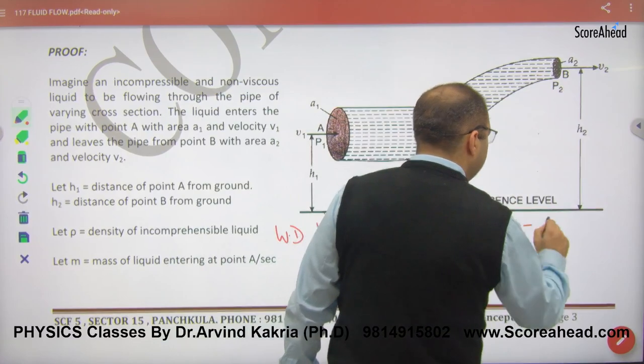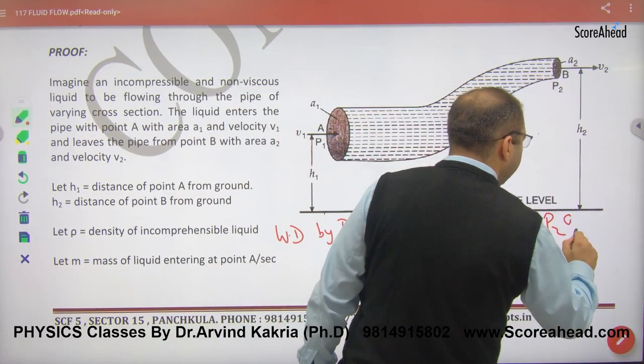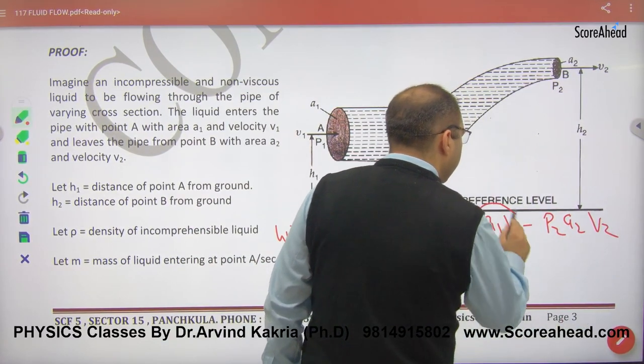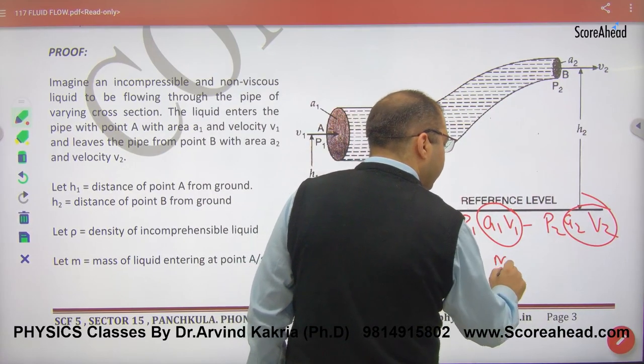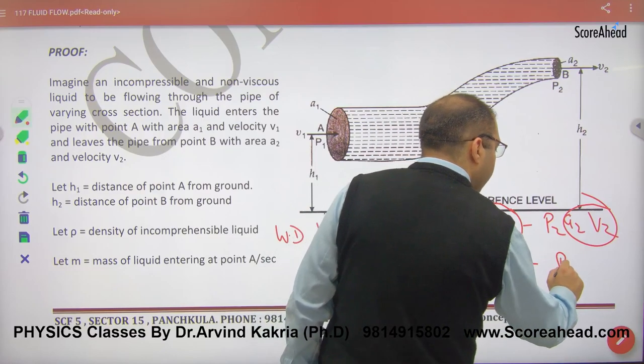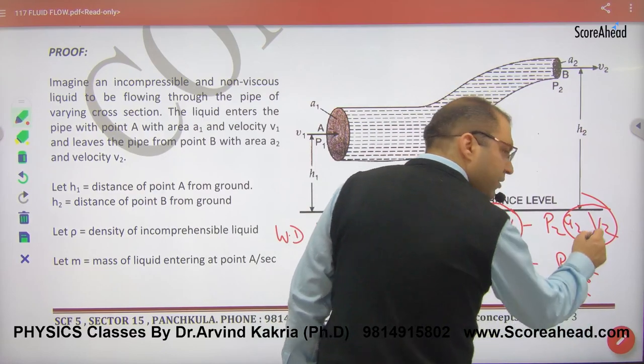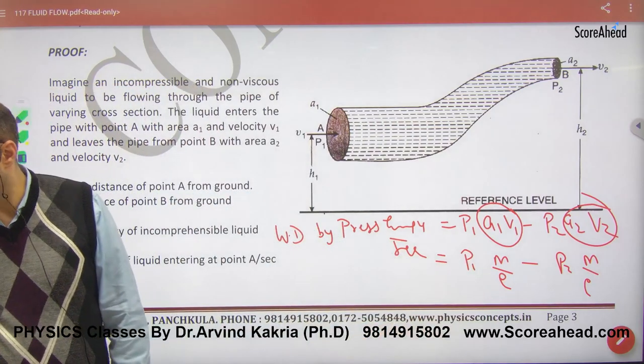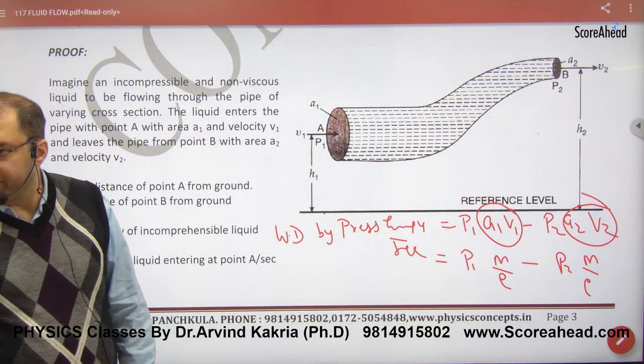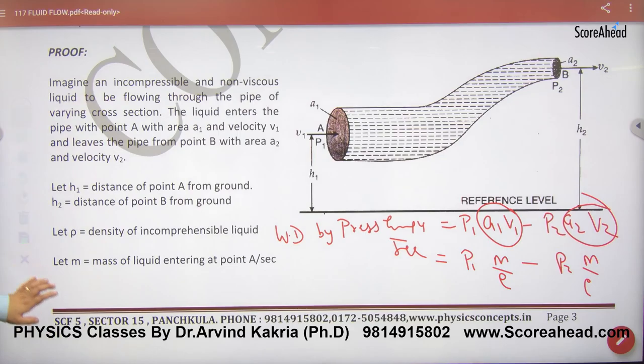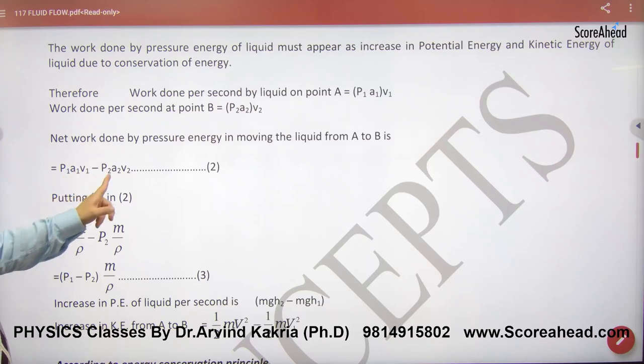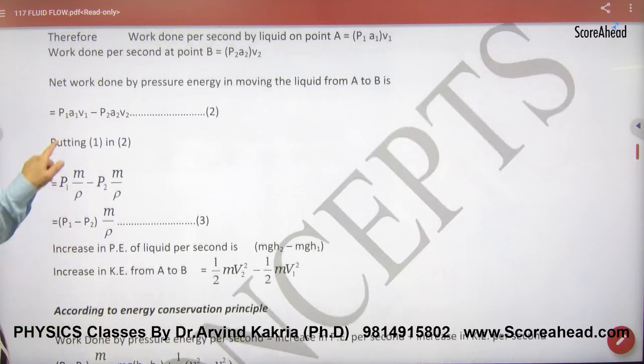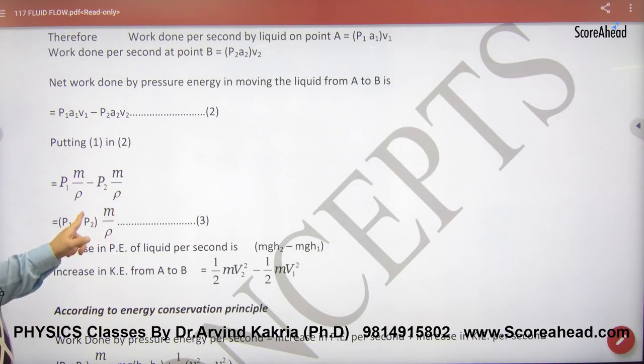Now what was left? P1 a1 v1 minus p2 a2 v2. A1 v1, a2 v2, what was left? M by rho. This was right. M by rho, equation of continuity. M by rho. So I will use it now. A1 v1, a2 v2, M by rho. So this is written. In this first step, what was left? Change of pressure energy. A1 v1, a2 v2, M by rho. So this is done. Work done by pressure energy per second.